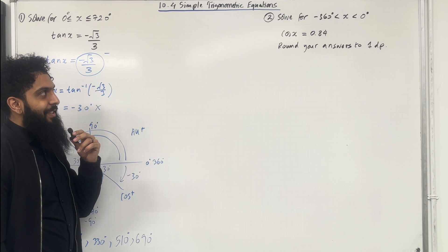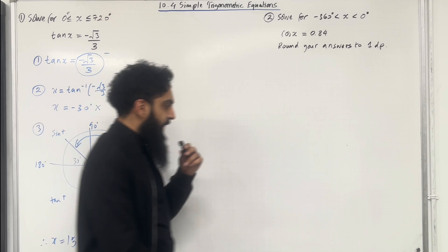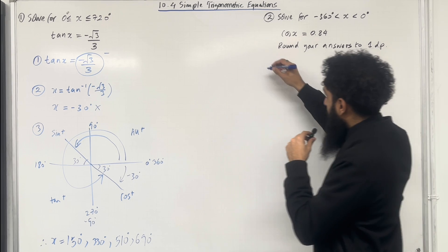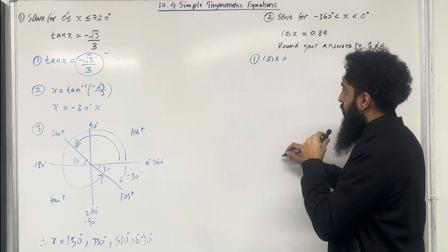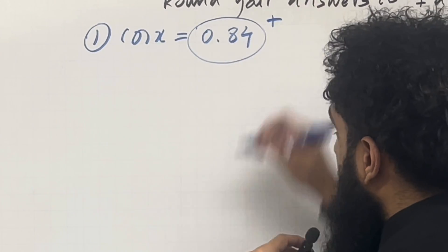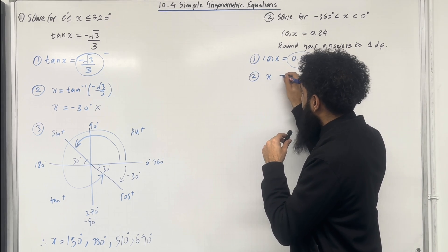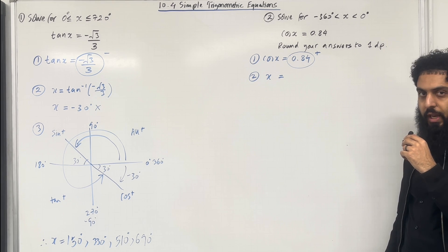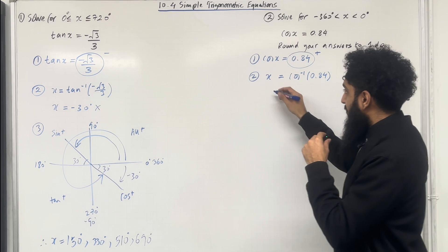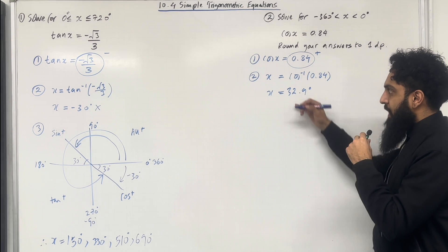For minus 360 degrees is less than x, which is less than 0 degrees, cos x equals 0.84. Round your answers to one decimal place. Step number 1: we write down the trigonometric equation — cos x equals 0.84. We circle 0.84 and indicate that cos x is a positive value. Step number 2: x is obtained by taking cos inverse of 0.84. Using our calculator, x equals 32.9 degrees to one decimal place — the principal solution.